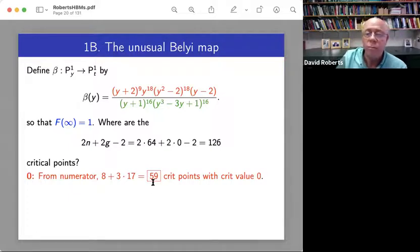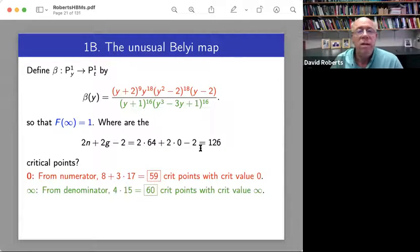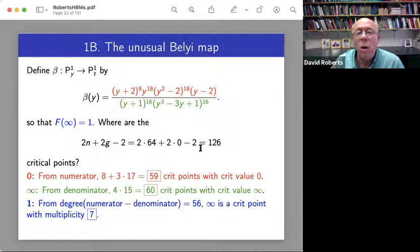Same deal on the denominator. The arithmetic is easier. Four roots, each with multiplicity 16 in the fiber, each contributing 15 towards the different. So that's a 60. We have a little bit left.